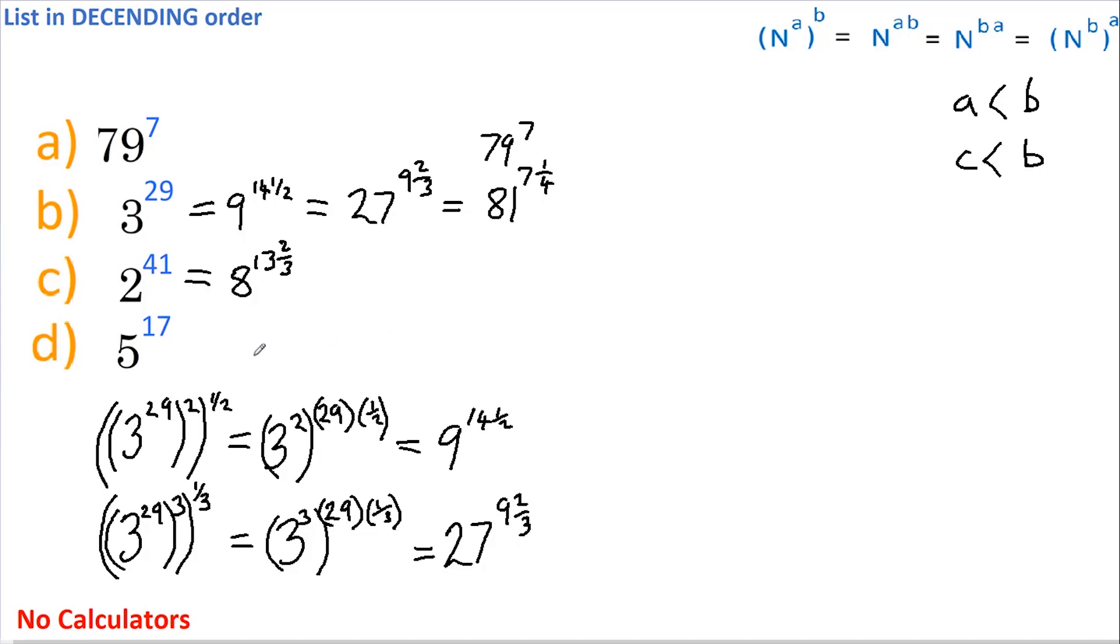Now let's consider d. If we square this and then take the square root, this is the same as squaring 5, which is 25, and halving 17, which is 8 and a half.